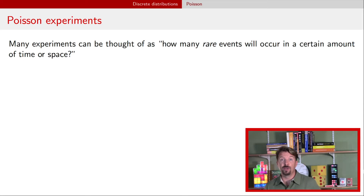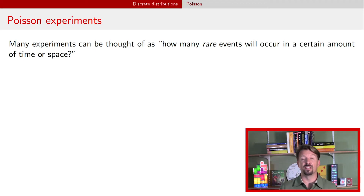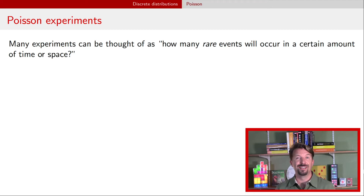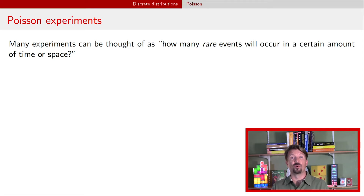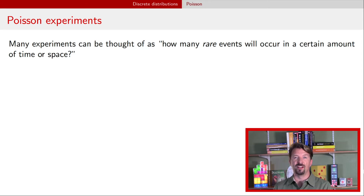The last video talked about binomial random variables, which were counting the number of successes out of some number of trials. Now there are other situations where the experiment really involves counting some number of something, but there's no clear number of trials that were attempted. If you think about counting the number of things over a certain amount of time or a certain amount of space, then that is probably better represented by a Poisson random variable.